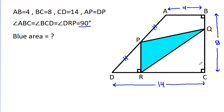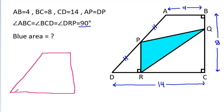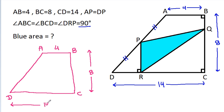So, in ABCD, it is A, B, C, D. AB is 4, BC is 8, and CD is 14. These two angles are 90 degrees, which means AB will be parallel to CD, and point P is the midpoint of AD, meaning AP is equal to DP.